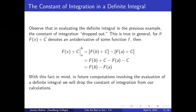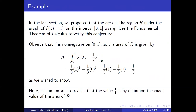Observe that in evaluating the definite integral in the previous example, the constant of integration dropped out. This is true in general. If F(x) + c denotes an antiderivative of some function f, then [F(x) + c] evaluated between a and b equals F(b) + c minus F(a) + c, which is F(b) minus F(a). With this fact in mind, in future computations we will drop the constant of integration from our calculations.